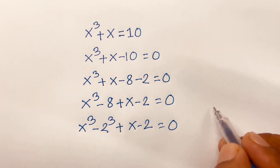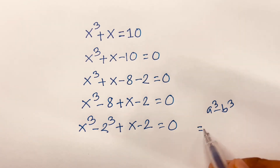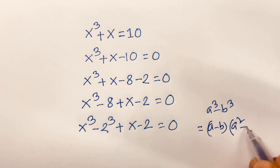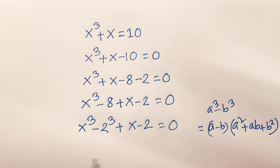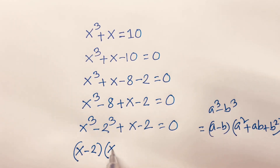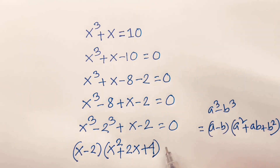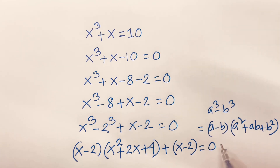We know that a cubed minus b cubed is equal to (a minus b)(a squared plus ab plus b squared). According to this rule, here is (x minus 2) times (x squared plus 2x plus 4), plus here is (x minus 2), is equal to 0.